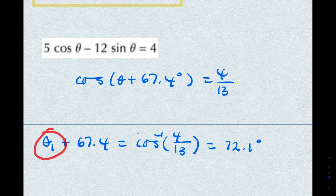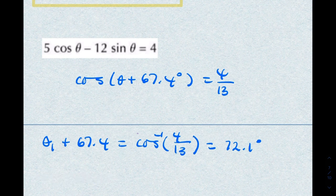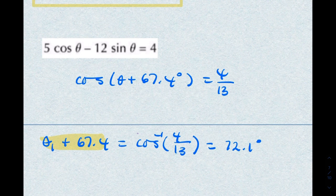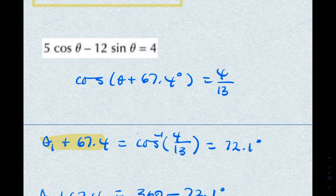So that's your first value for theta. Your second value will be 360 minus, or we should say because we're still dealing with theta plus 67.4, so we'll say theta 2 plus 67.4 is 360 minus 72.1 degrees. That will give you 287.9.